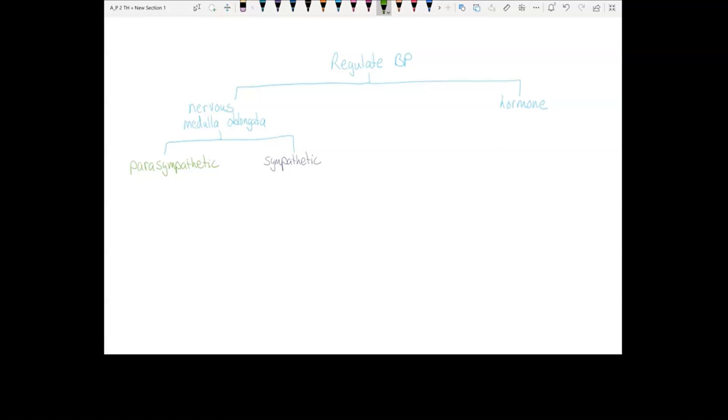Parasympathetic uses the cardioinhibitory center. This center uses the vagus nerve to secrete acetylcholine onto the nodes of the heart. This reduces heart rate, and if you reduce heart rate, you reduce cardiac output, which reduces blood pressure.